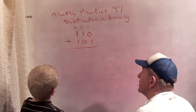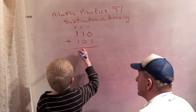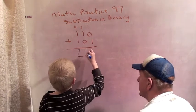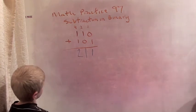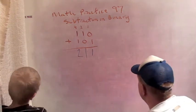What do you get when you add these things? Well, you get 2, 1, 1. Okay, and 2, 1, 1 is not a good binary number, so how do we fix it to make it a good binary number?